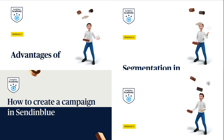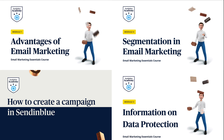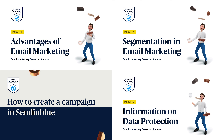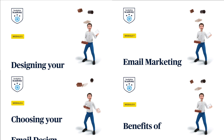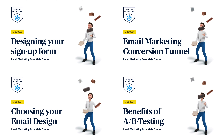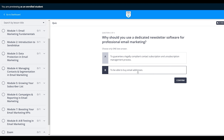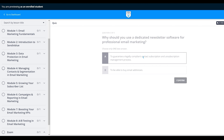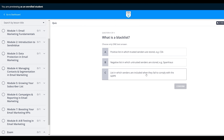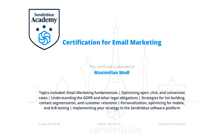This is module three of eight modules that make up our Email Marketing Certification course. In this part of the course, we delve deeply into the legal requirements that you have to respect as a business using email marketing. After completing all of the modules, you'll be ready to take our final exam and become an Email Marketing Expert. You can add the certification to your LinkedIn profile or CV to show the world that you have expertise in the subject of email marketing.